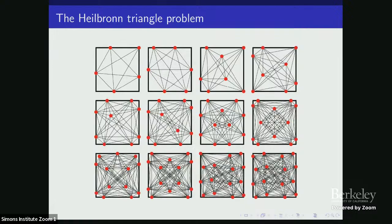It's like many other functions in extremal combinatorics — it's hard to determine its values for small N. Here are some pictures of the extremal configurations, the best known configurations for small N. For N equals five I think the answer is known, for N equals six also. Starting with N at least seven, these are just the best known and they're not matching upper bounds. The pictures look like they have all sorts of symmetry but it's kind of hard to understand what the patterns are.